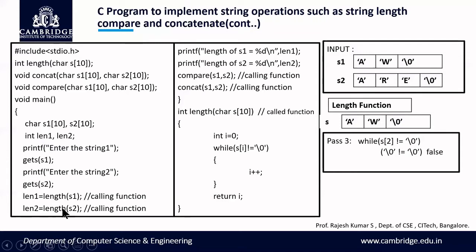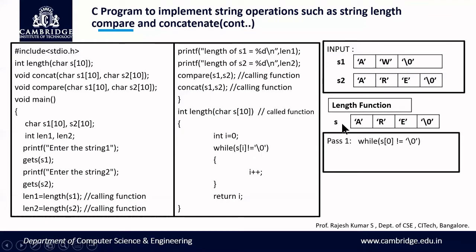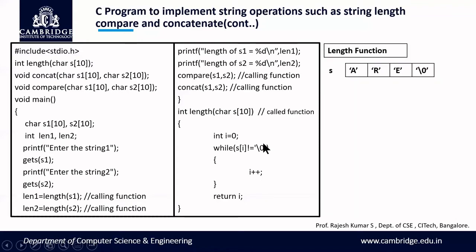The compiler moves to the next line: len2 = length(s2). We are calling the same length function but passing s2 — which is 'a','r','e',null. The s2 value is copied into the s array. i is re-initialized to zero. First pass: s[0]='a', not equal to null, increment i → i=1. Second pass: s[1]='r', not equal to null, increment i → i=2.